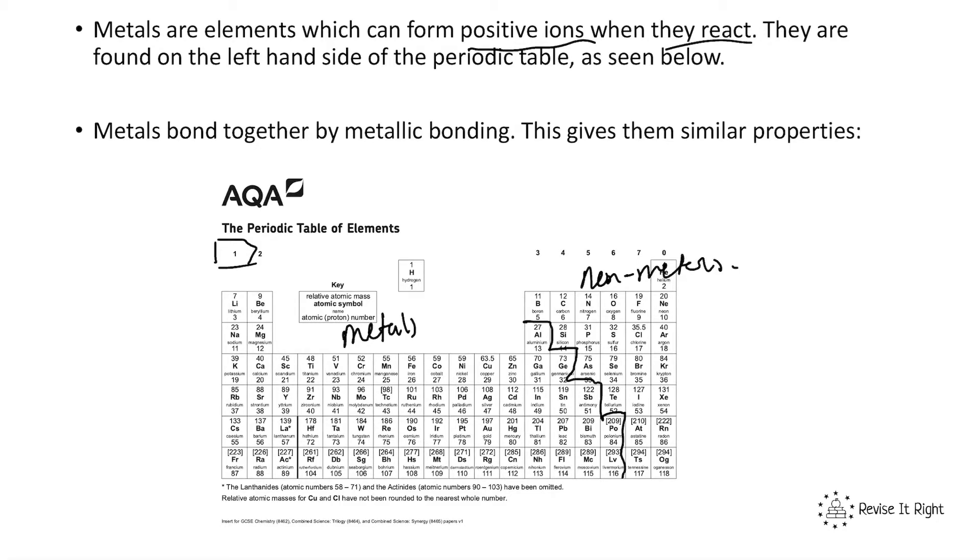Metals bond together by metallic bonding. A metal and a metal will bond by a metallic bond, which gives them very similar properties. For now, just understand that metals are elements which can form positive ions when they react and are found on the left-hand side.